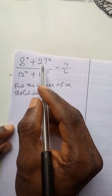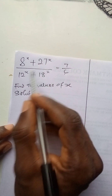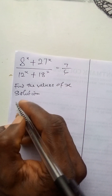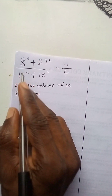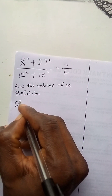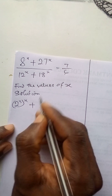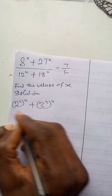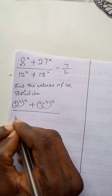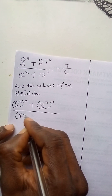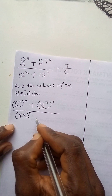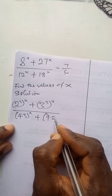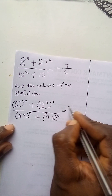We express 8 as a number in base 2 and 27 as a number in base 3, and do the same for the denominator. So 8 to the power x becomes 2³ to the power x, plus 27 to the power x becomes 3³ to the power x, all over 12, which is 4 times 3 to the power x, plus 18, which is 9 times 2 to the power x. This equals 7 over 6.